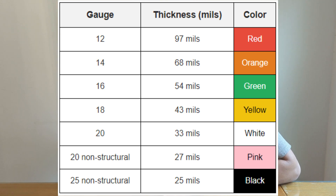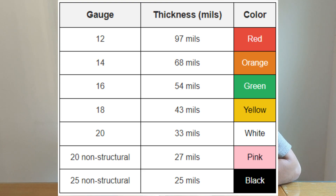These are the common gauges and their thickness in mills. 14 gauge is 68 mills — so 68 thousandths of an inch. As the gauge number increases, the mill thickness decreases. So a 20 gauge stud is thinner than a 14 gauge stud.